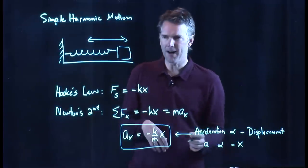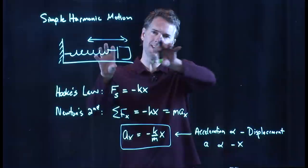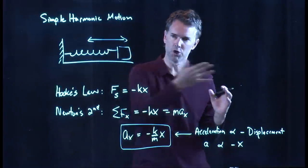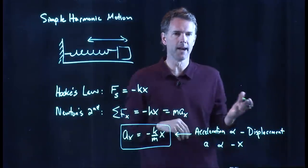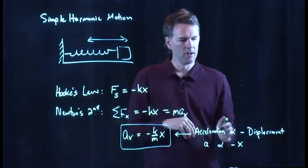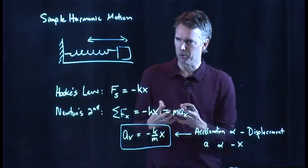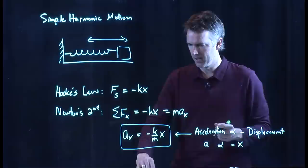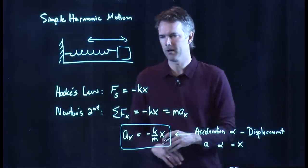The negative just means restoring. It's trying to restore itself to equilibrium. If that was a positive, it's like the spring would keep pushing out forever. If you stretch the spring, it would push harder in that direction. And that box would never return to x equals zero. So the negative sign just means restoring force. It's got to pull it back towards x equals zero. And this is the basis for simple harmonic motion.